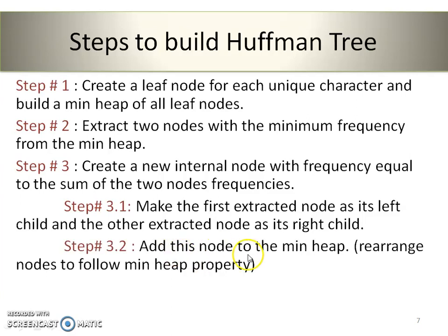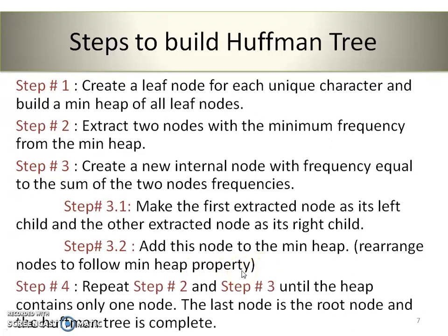Step 4: Add this new node back to the min-heap and rearrange all the nodes to follow the min-heap property, that is all nodes must be in order from smaller to greater. Step 5: Repeat steps 2 and 3 until the heap contains only one node. The last remaining node will be the root node and the Huffman tree is complete.